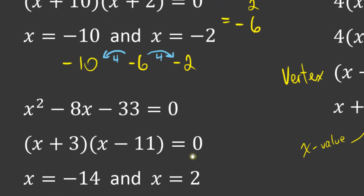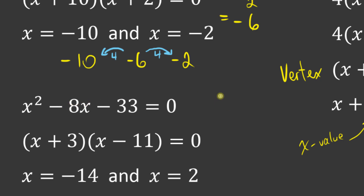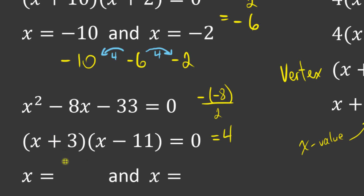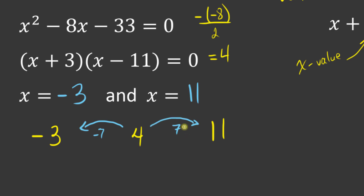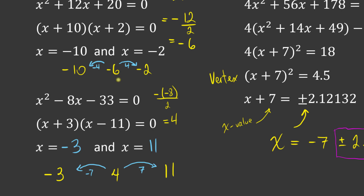Let's look at the next factored form example. Negative b over 2a: negative negative 8 over 2, so positive 8 divided by 2, which is 4 — that's the x-value of my vertex. My zeros are actually negative 3 and positive 11. I've got a zero at negative 3 and a zero at 11, and the x-value of my vertex is 4. If I subtract 7 I get negative 3, and if I add 7 I get 11. So this entire time we've been finding the distance between the vertex and the zeros.